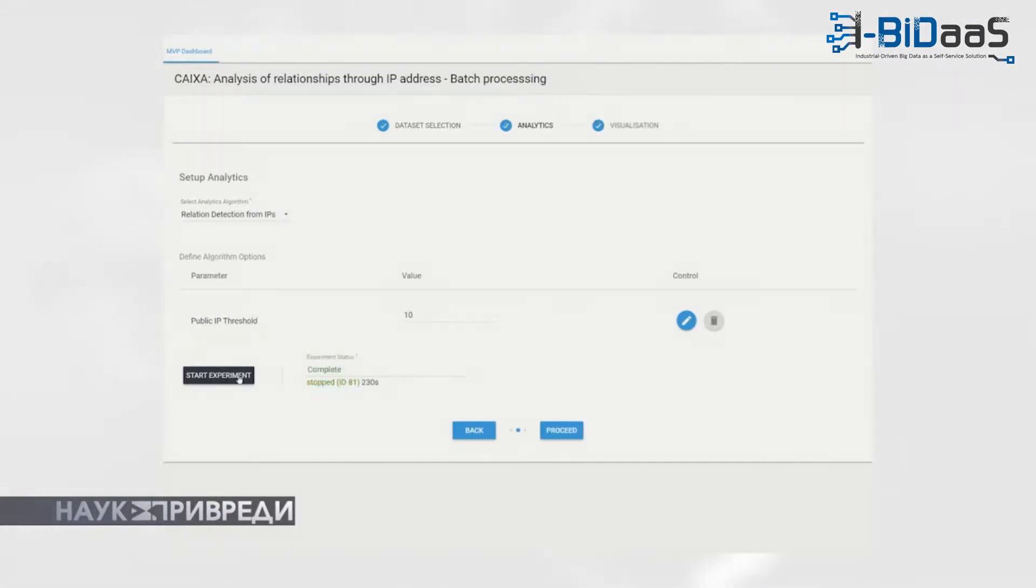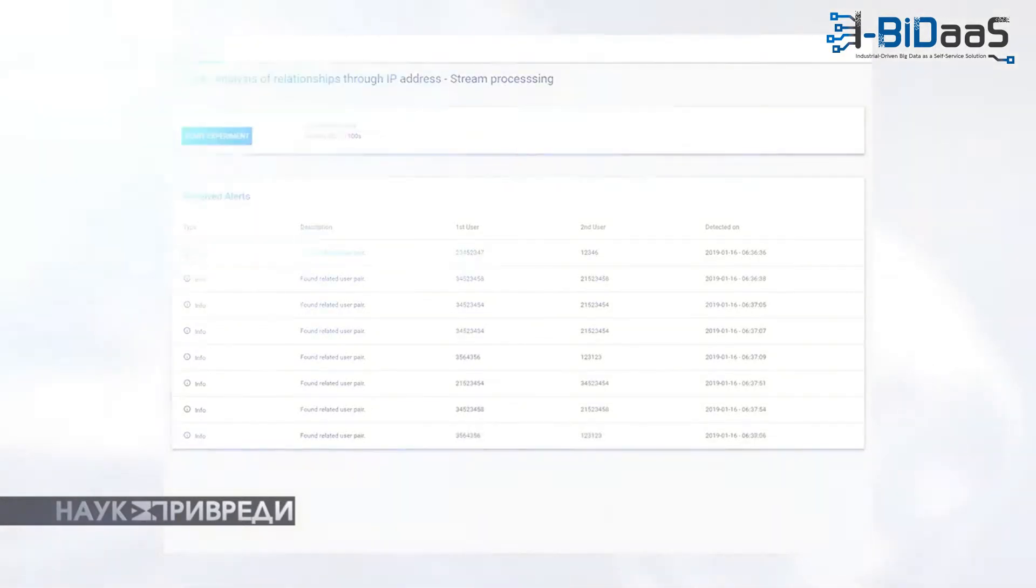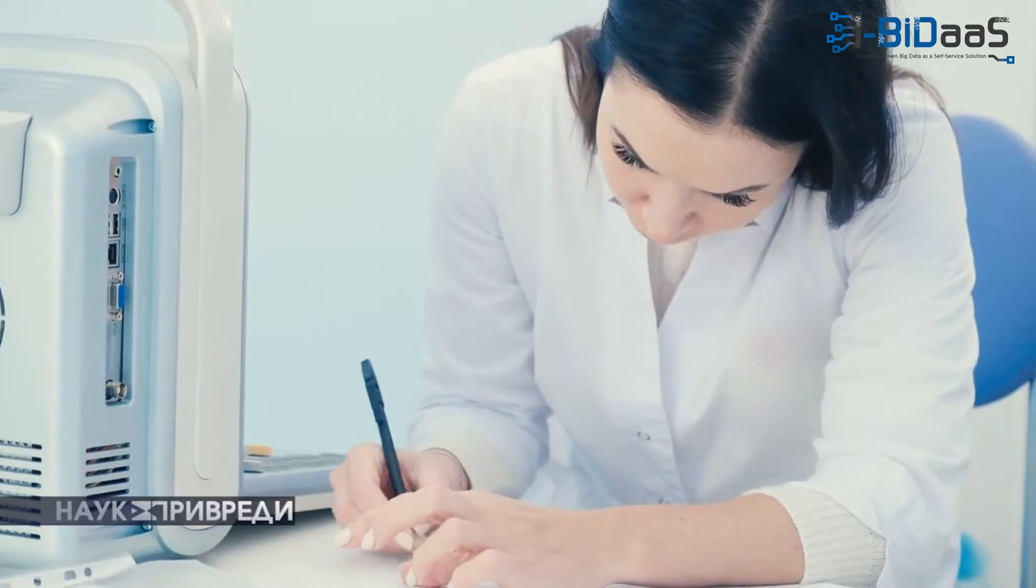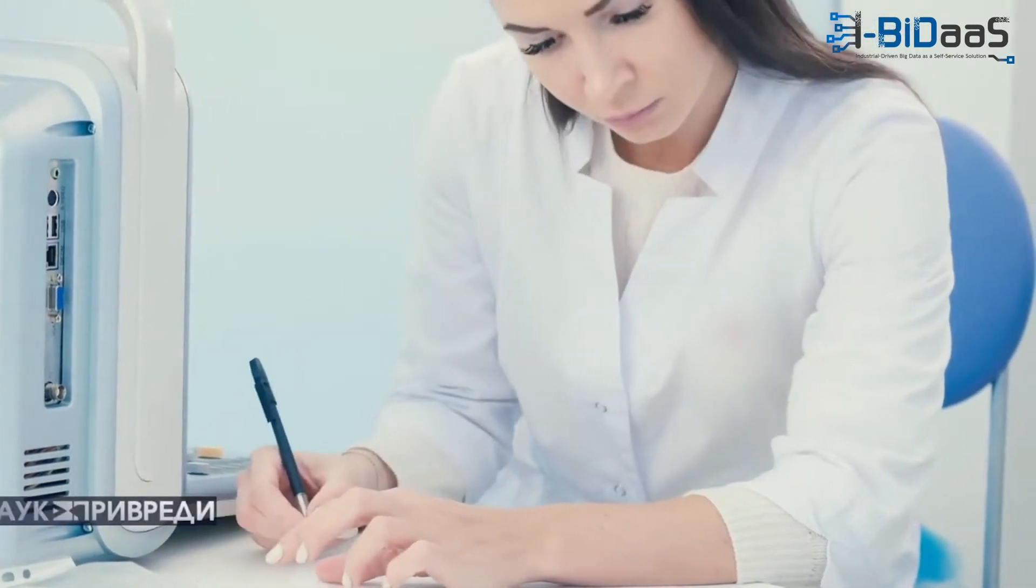Then later, in real-time transaction processing, using these established relationships, the system can identify suspicious transactions where patterns deviate from normal behavior. This demonstration was organized at the end of January 2019.